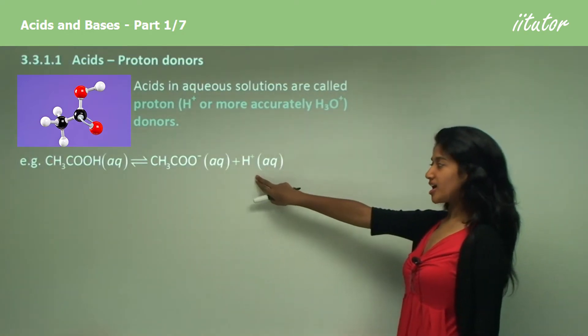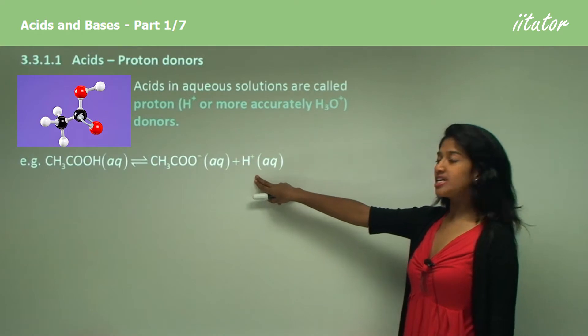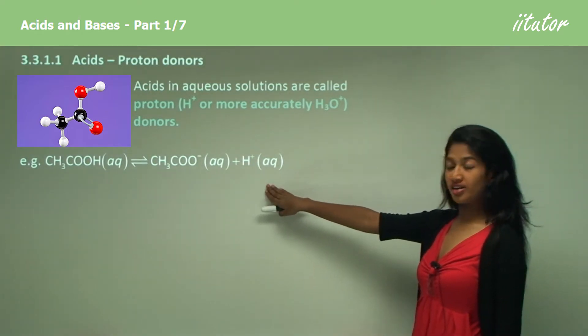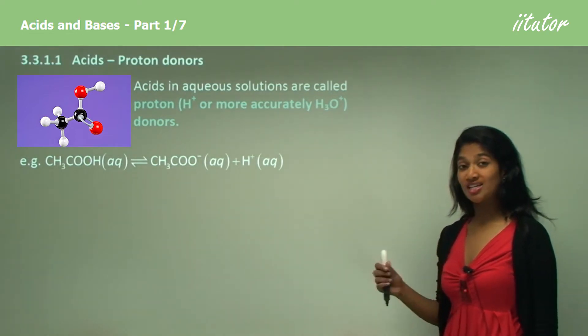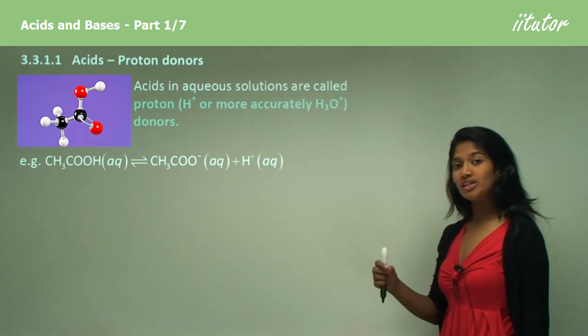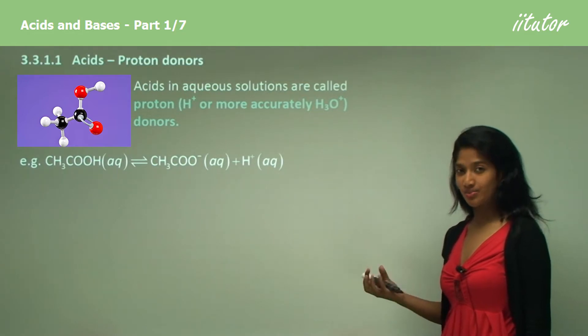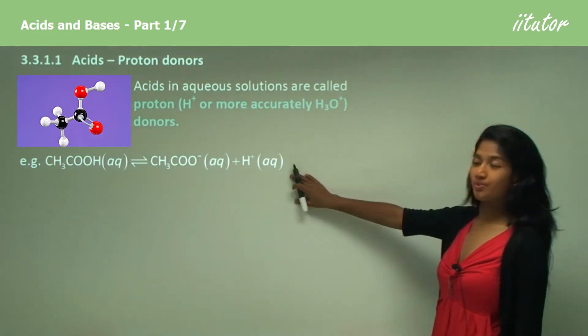A hydrogen ion is called a proton because a hydrogen ion is a hydrogen atom that has lost an electron. Since a hydrogen atom only has a proton and an electron, when it loses an electron, it only has a proton. That's why it's called a proton.